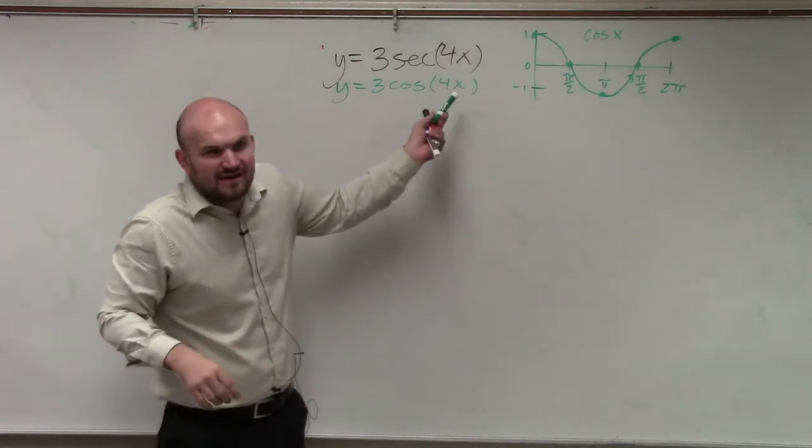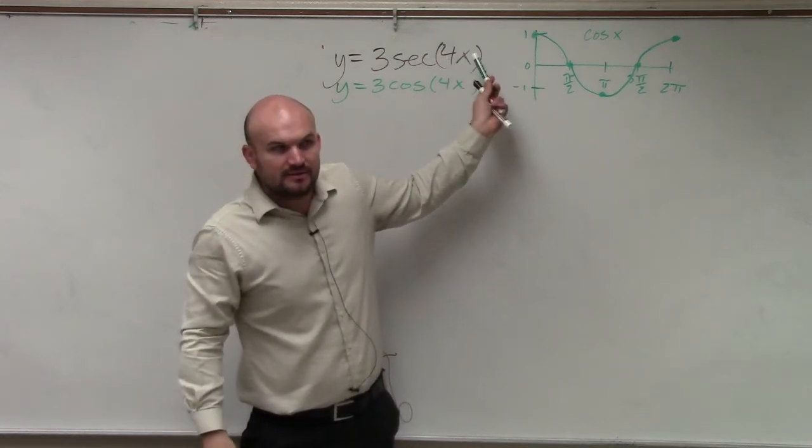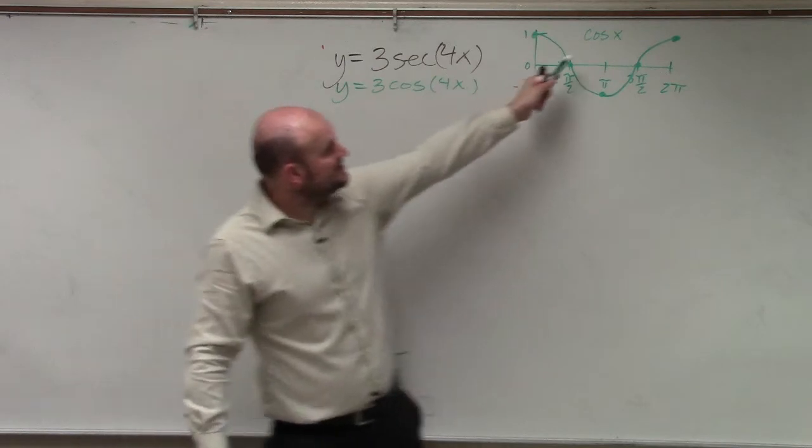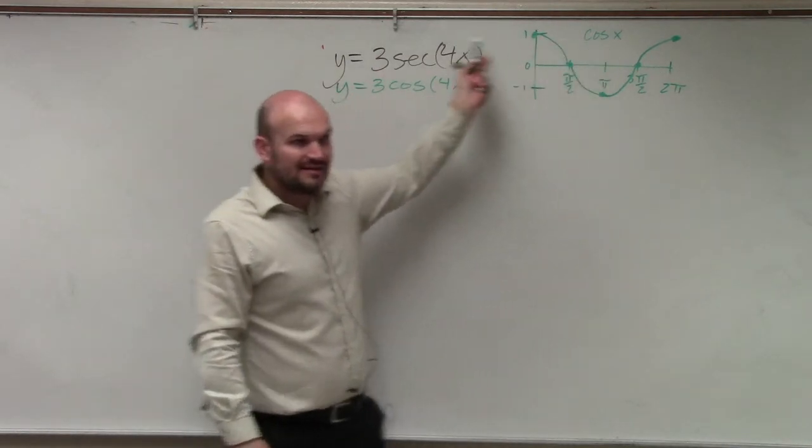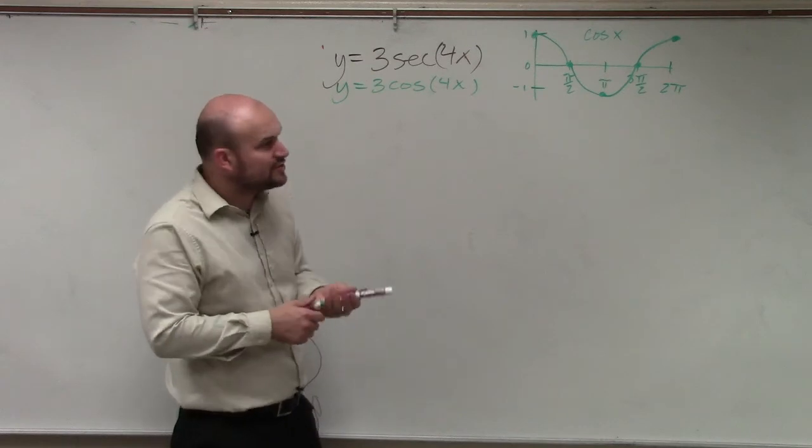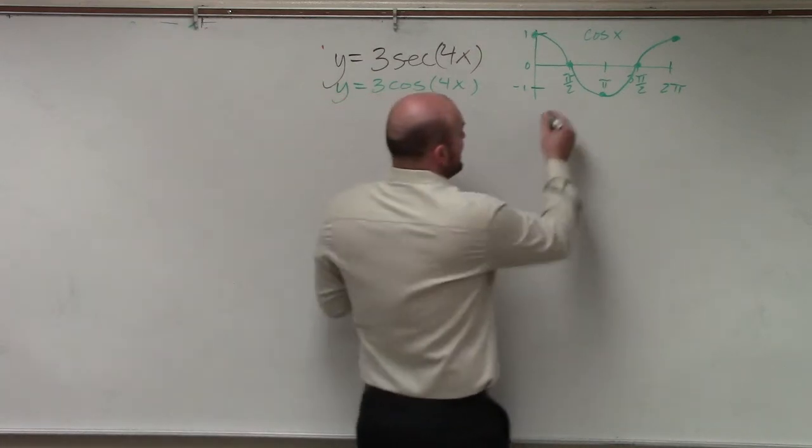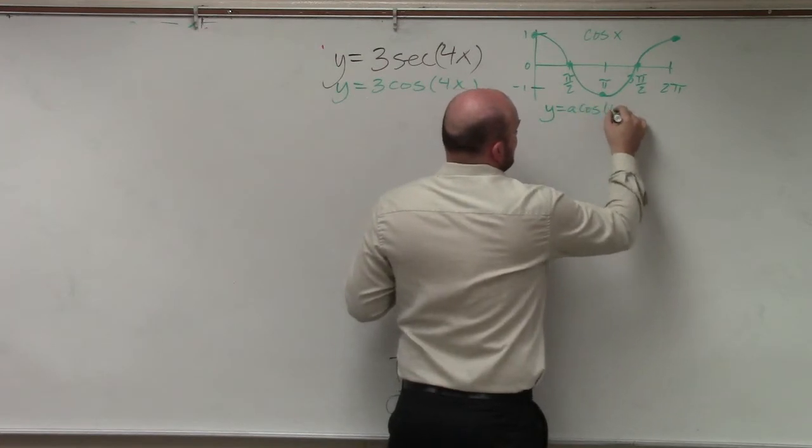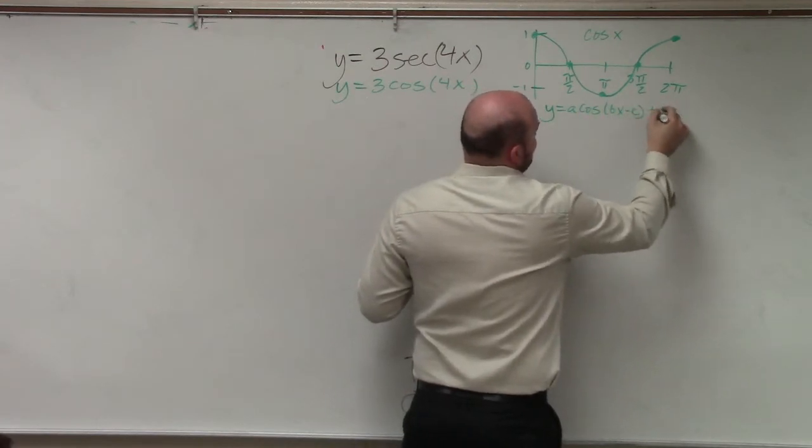That's why I'd rather graph this than try to go in and graph that. But before, I can graph this because this is no transformations, right? Now we have some transformations. So we have to identify what are all these transformations that's happening. And remember, I gave you guys an equation. It looked like this, y equals a times cosine of bx minus c plus d.